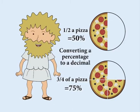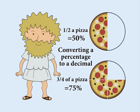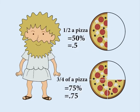We can also express a percentage as a decimal. To convert a percentage to a decimal, remove the percent sign and move the decimal point two places to the left. So 50% becomes 0.5, and 75% becomes 0.75.